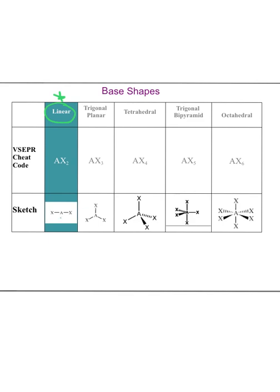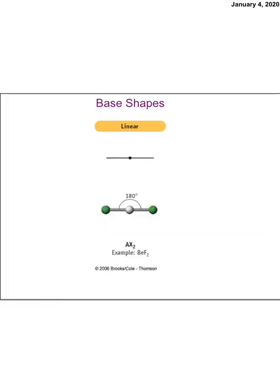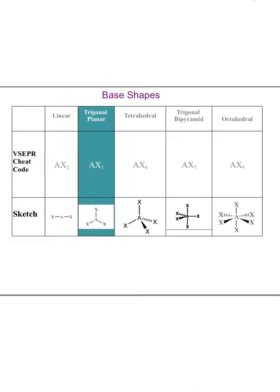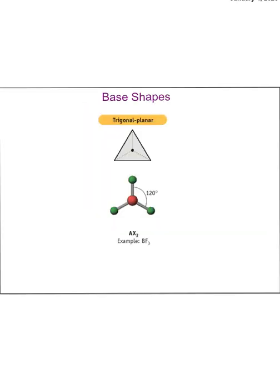The next base shape is trigonal planar, AX3, which we already saw — a central atom with three atoms bonded to it. Trigonal planar looks like a flat triangle: if you connect the bonded atoms, it's a triangle and it's flat, not a pyramid. That's where the name 'planar' comes from.